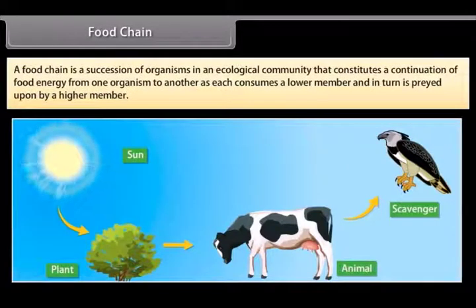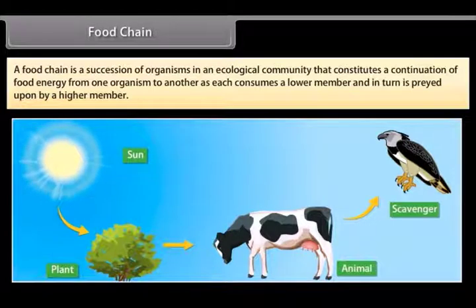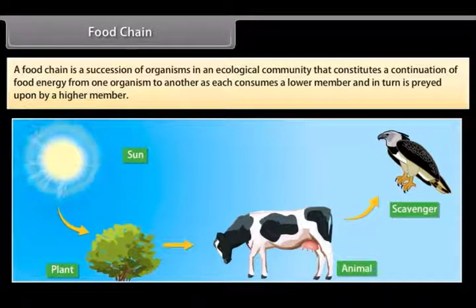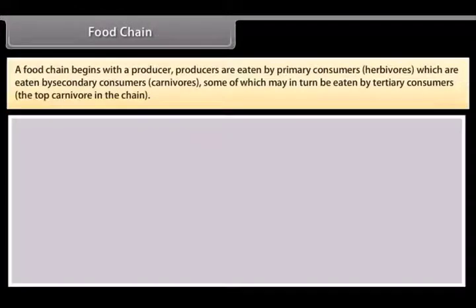Food chain. A food chain is a succession of organisms in an ecological community that constitutes a contribution of food energy from one organism to another as each consumes a lower member and in turn is preyed upon by a higher member. A food chain begins with a producer.